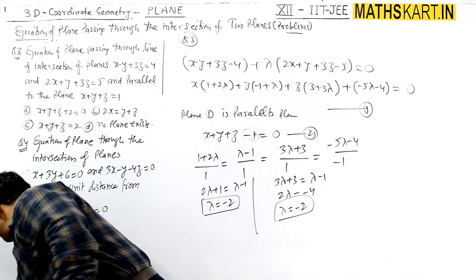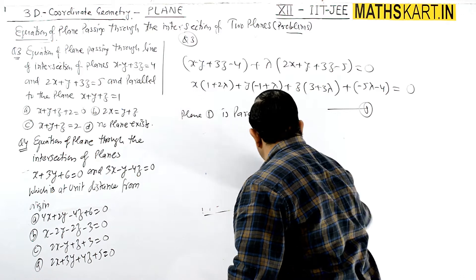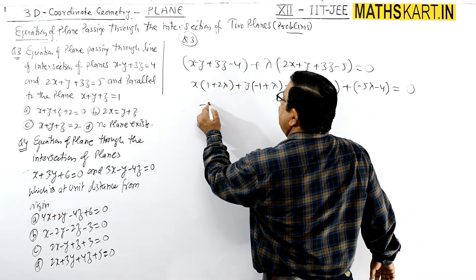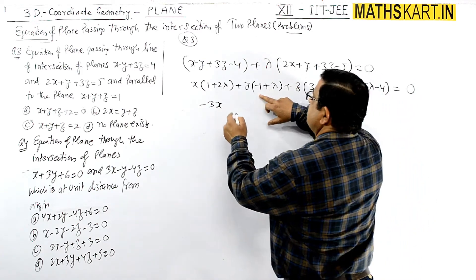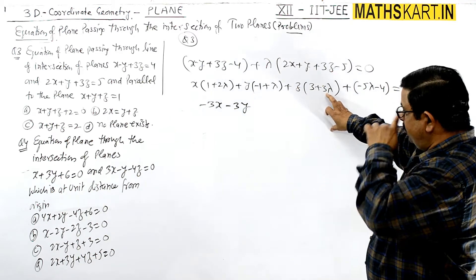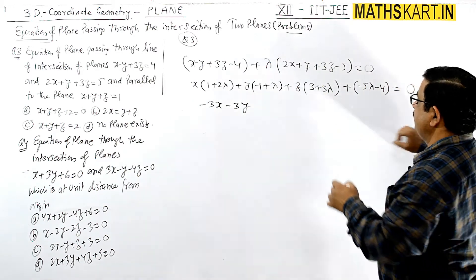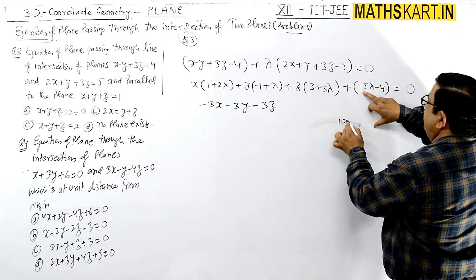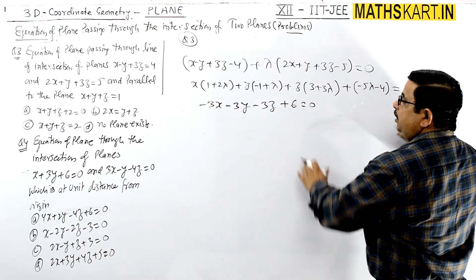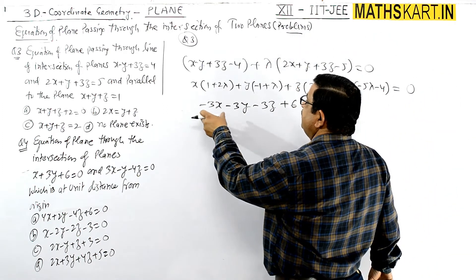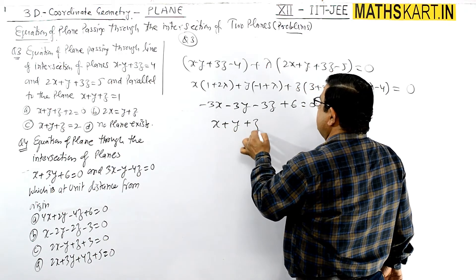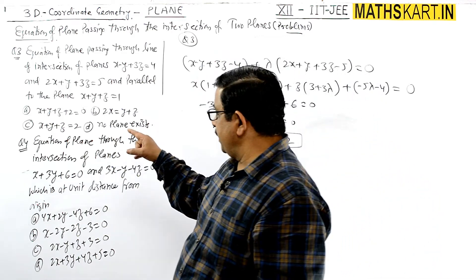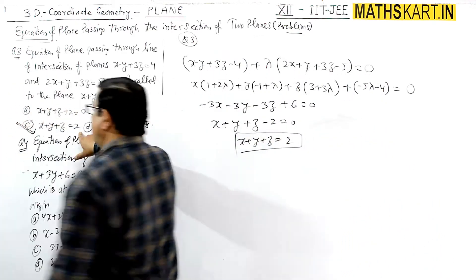Now substitute lambda equals minus 2 into the plane equation. We get: x coefficient is 1 plus 2 times minus 2 equals minus 3; y coefficient is minus 3; z coefficient is 3 plus 3 times minus 2 equals minus 3; constant is minus 5 times minus 2 minus 4 equals 10 minus 4 equals 6. So minus 3x minus 3y minus 3z plus 6 equals 0. Dividing by minus 3 gives x plus y plus z equals 2. Option C is correct.